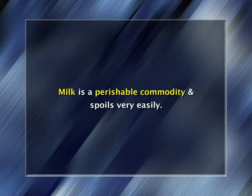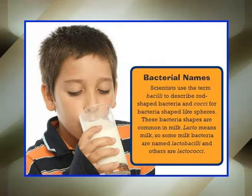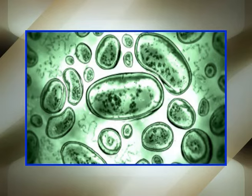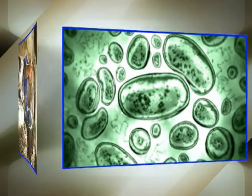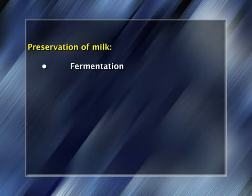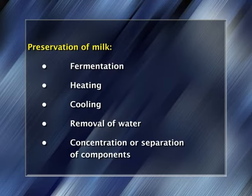Milk is a perishable commodity and spoils very easily. Its low acidity and high nutrient content makes it a perfect breeding ground for bacteria, including those which cause food poisoning. Even though raw milk is sterile at secretion, contamination by microorganisms can take place during milk handling, storage and other pre-processing activities. Bacteria from the animals, utensils, hands and insects may contaminate the milk, and their destruction is the main reason for processing. Preservation of milk can be achieved by fermentation, heating, cooling, removal of water, and by concentration or separation of components to produce foods such as butter or cheese.